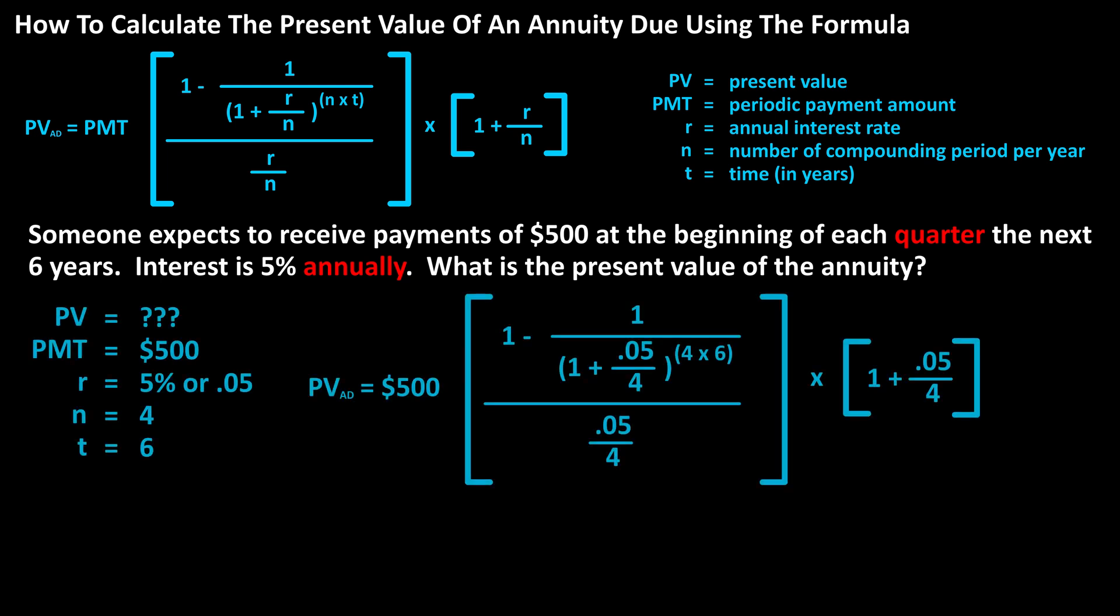Plugging into the formula, we have present value equals $500 times the quantity 1 minus 1 divided by 1 plus 0.05, the decimal value of the annual rate, divided by 4, the number of compounding periods, raised to 4 times 6, the number of years.